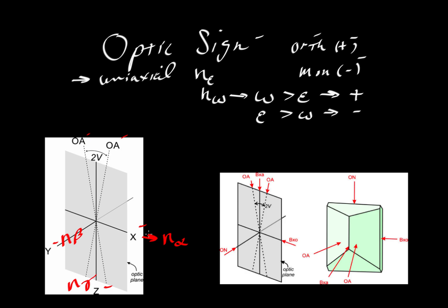We're interested in how N-beta compares to N-alpha and N-gamma. If beta is closer to alpha than to gamma, the mineral is positive. If beta is closer to gamma, it's negative. So the beta value: closer to alpha means positive, closer to gamma means negative.